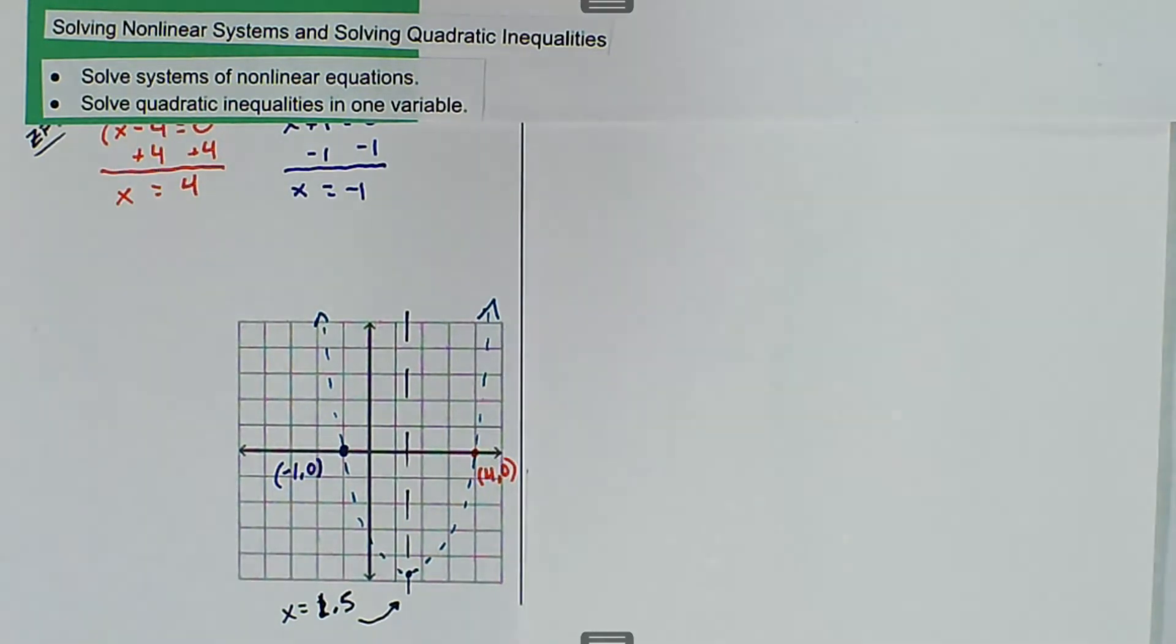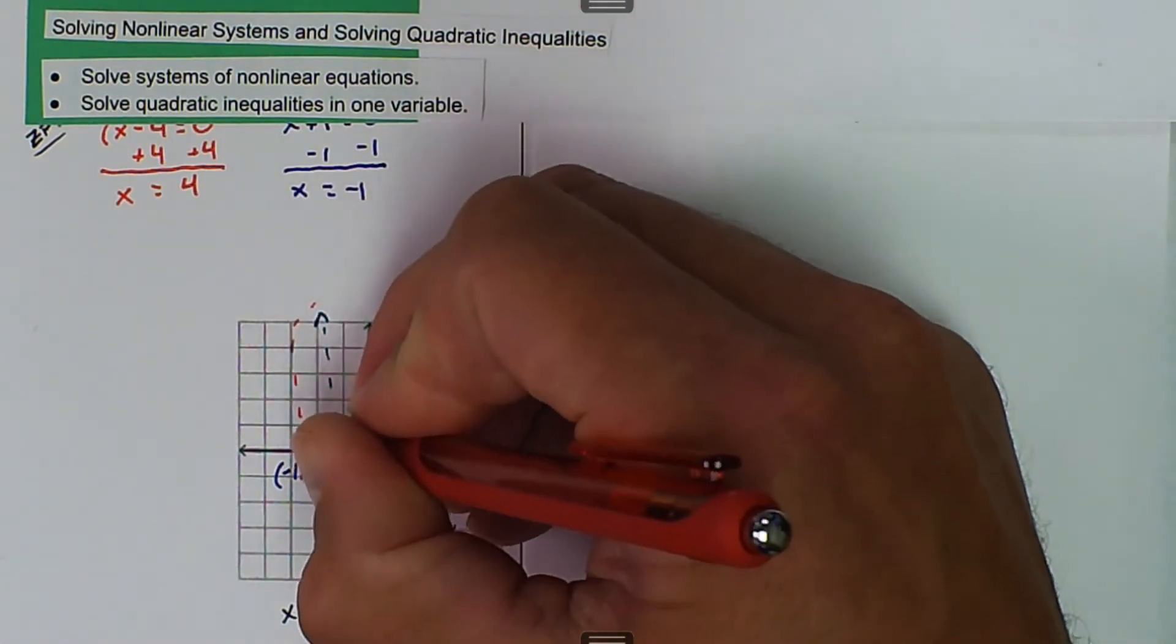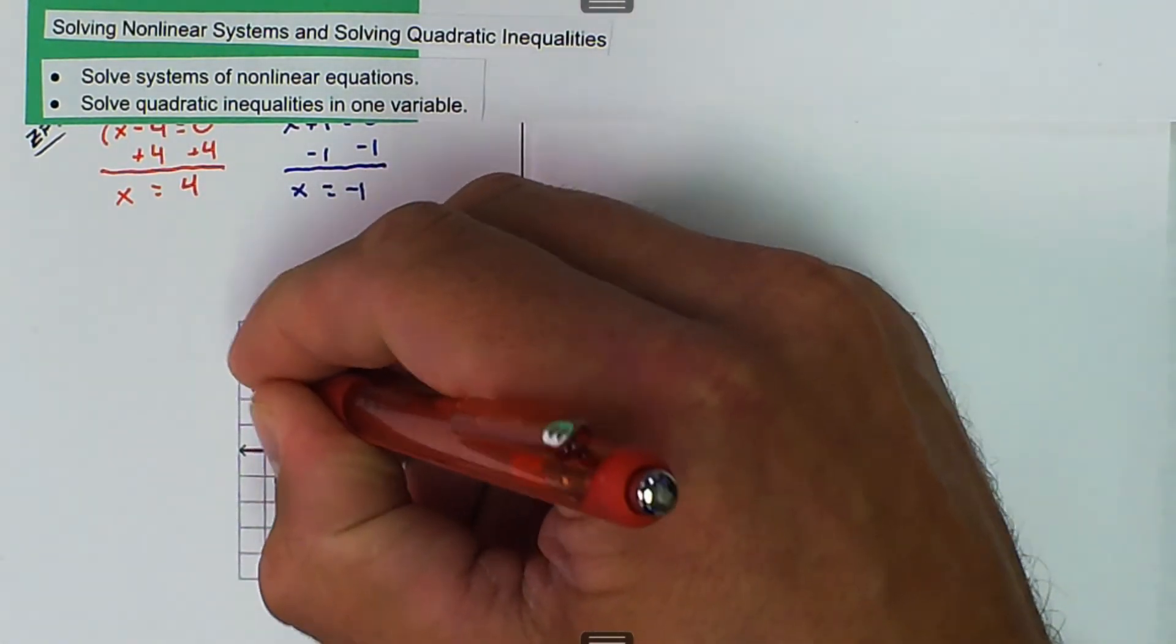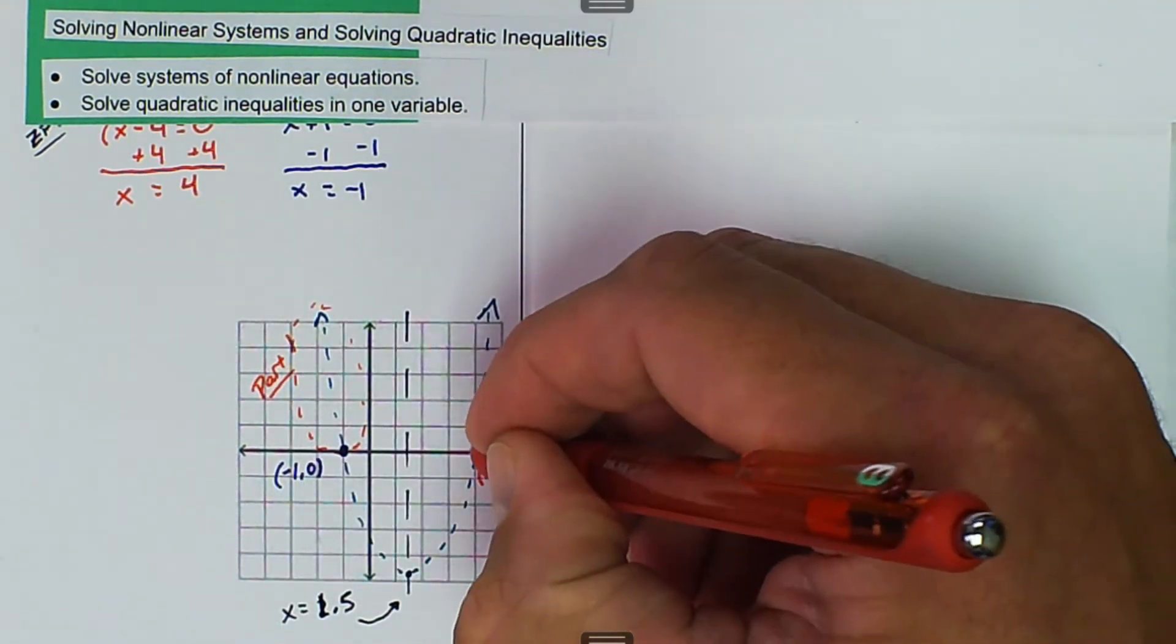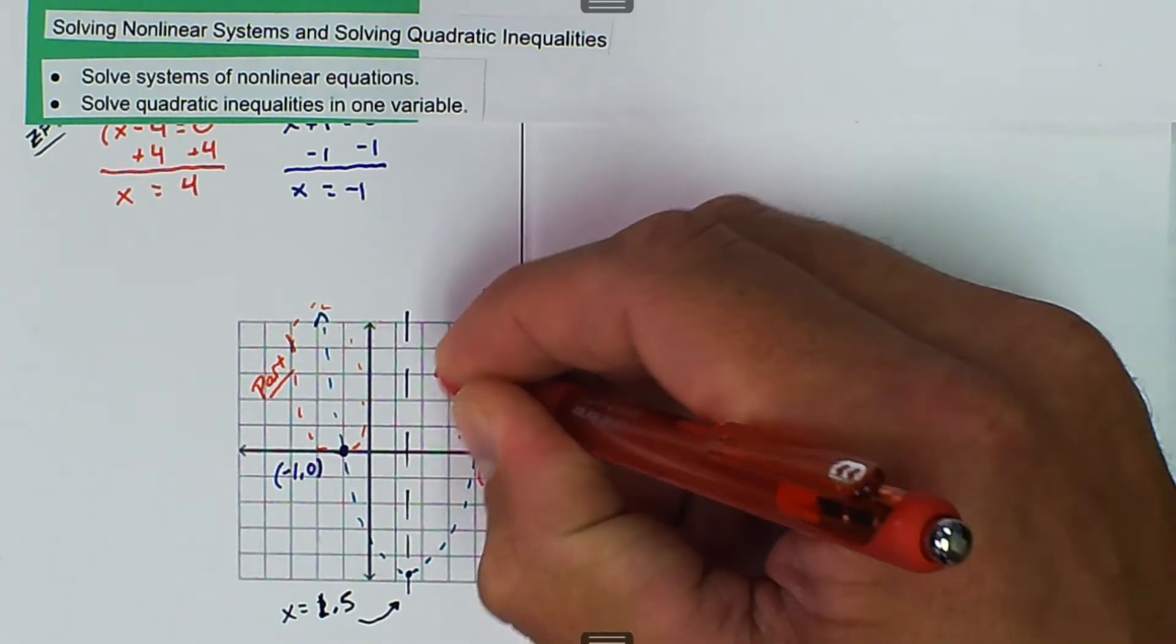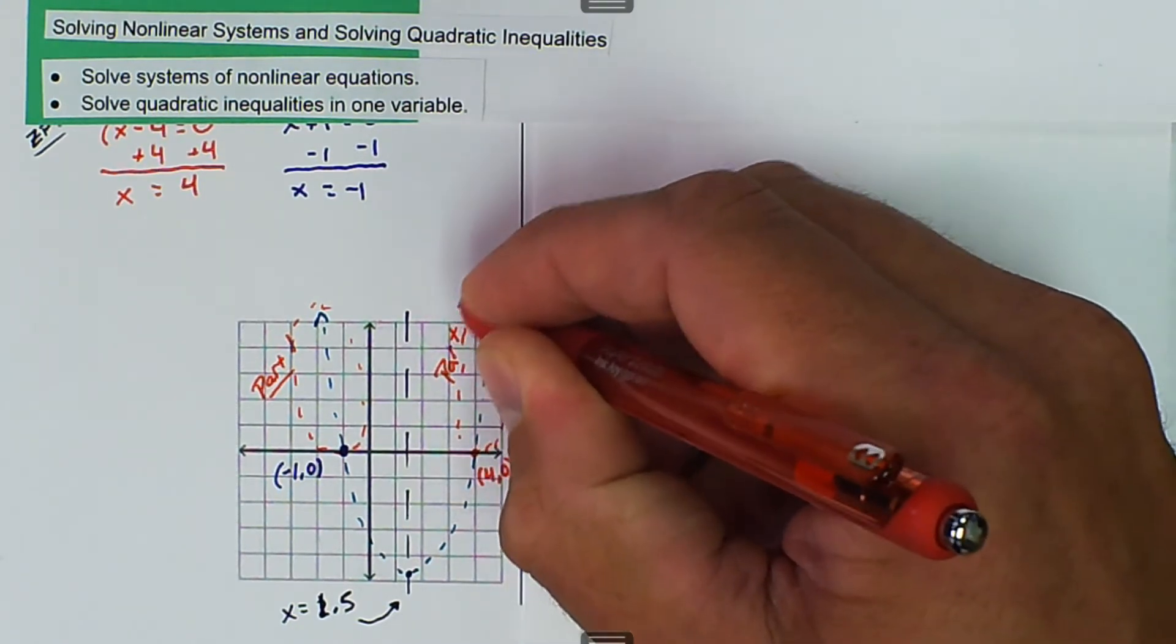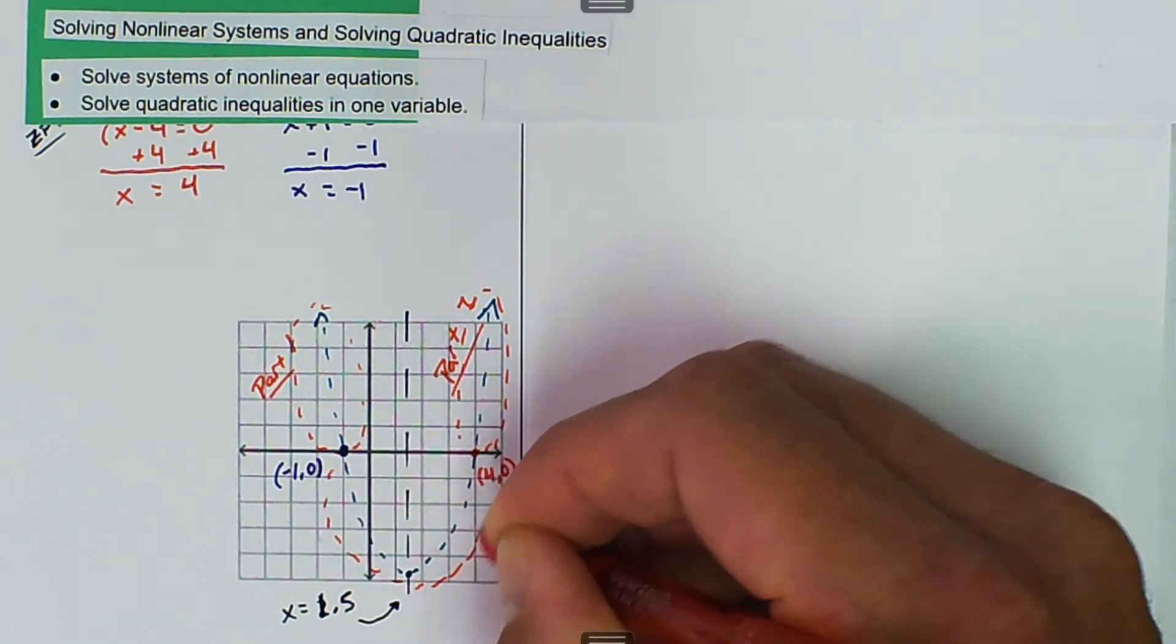And now we can look at this, and we can say that we have three different parts. So we have this one we'll call part number one. We'll say that this one is part two. And then this one down here we'll say is part three.